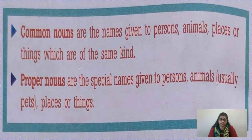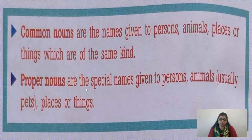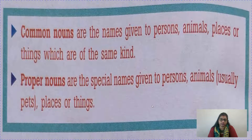This is very important. Common nouns are the names given to persons, animals, places or things which are of the same kind. And proper nouns are the special names given to persons, animals — usually pets — places or things. We say 'usually pets' because the animals which live in our home can be given names. But can you name the animals living in the forest? Will you give a name to a lion or tiger in the forest? No. Only animals that live with us, like pets, can be given names.